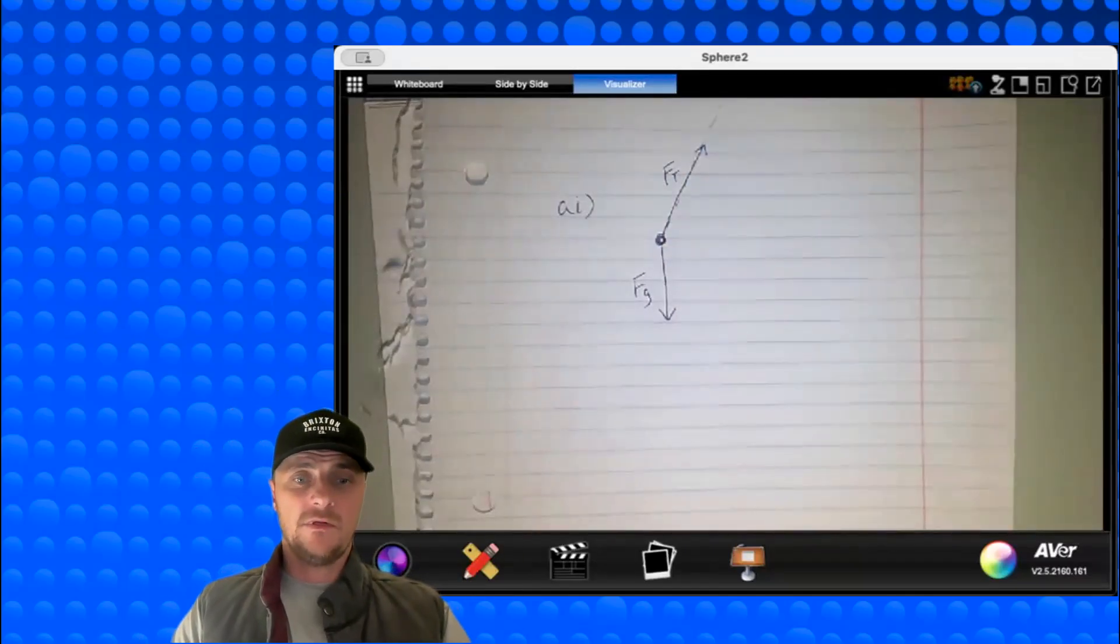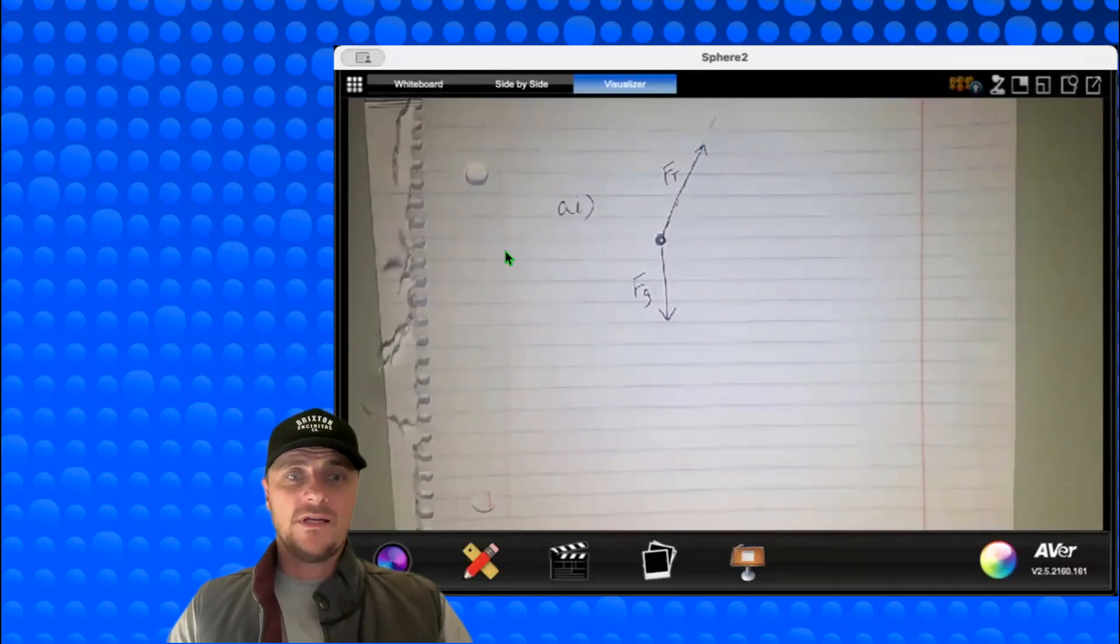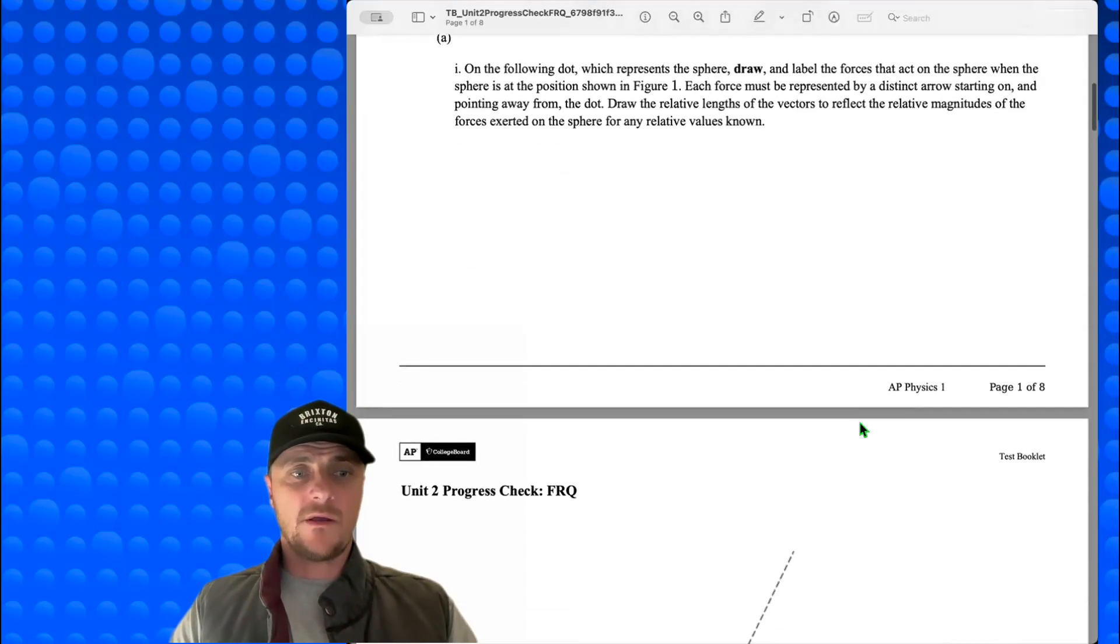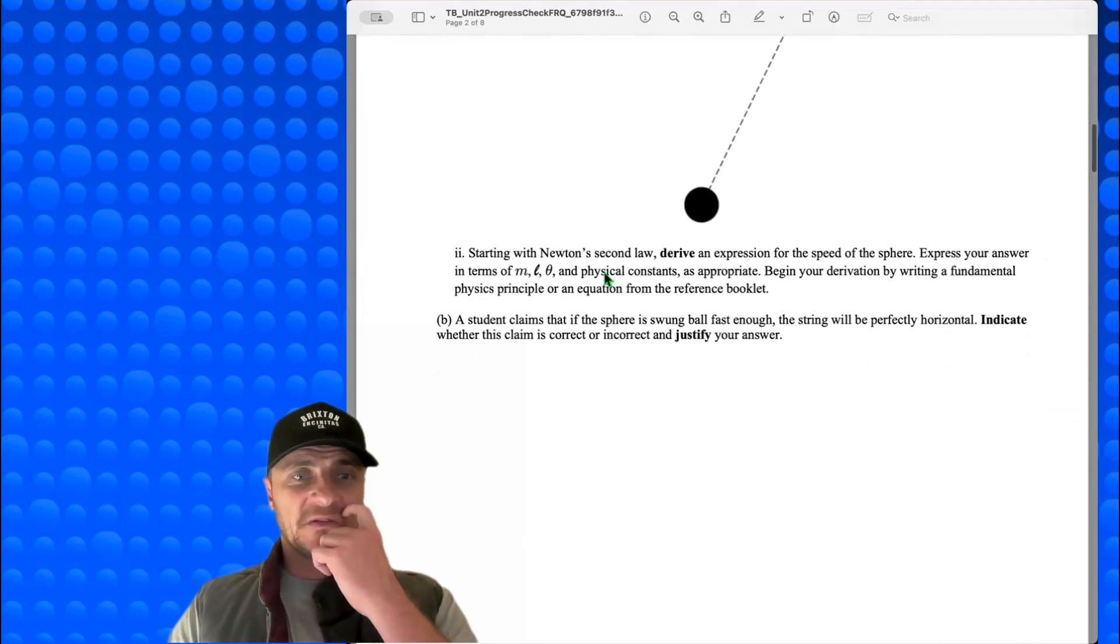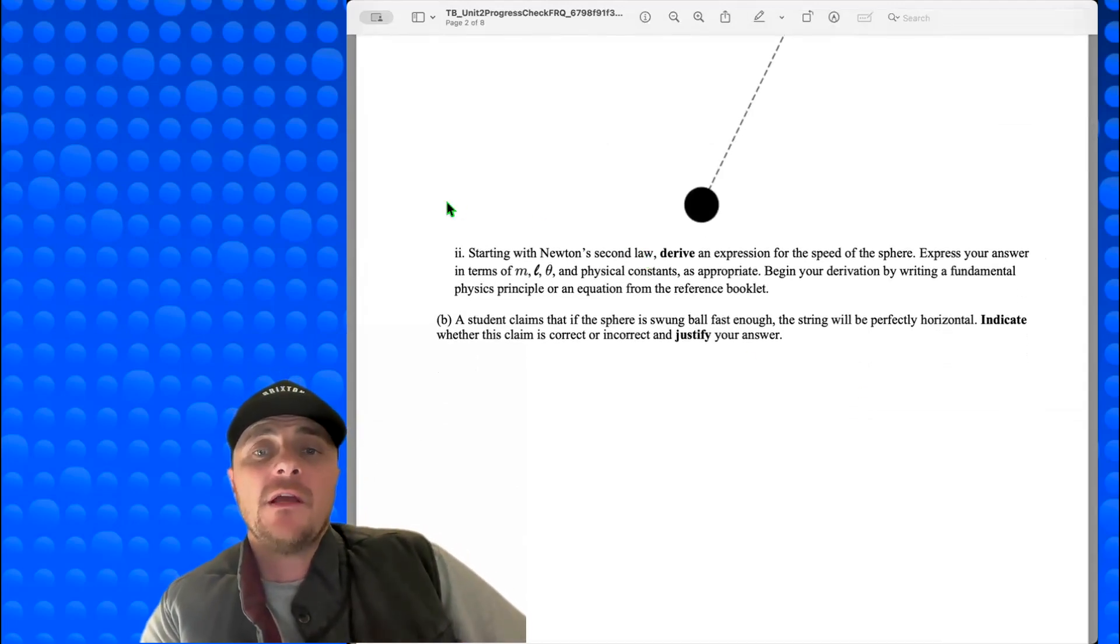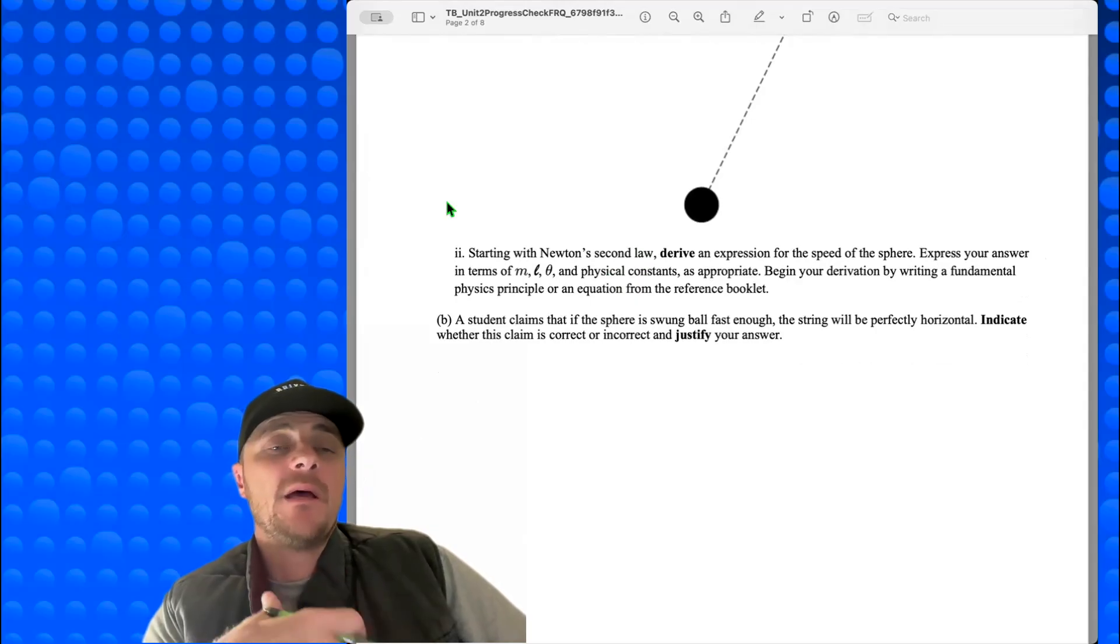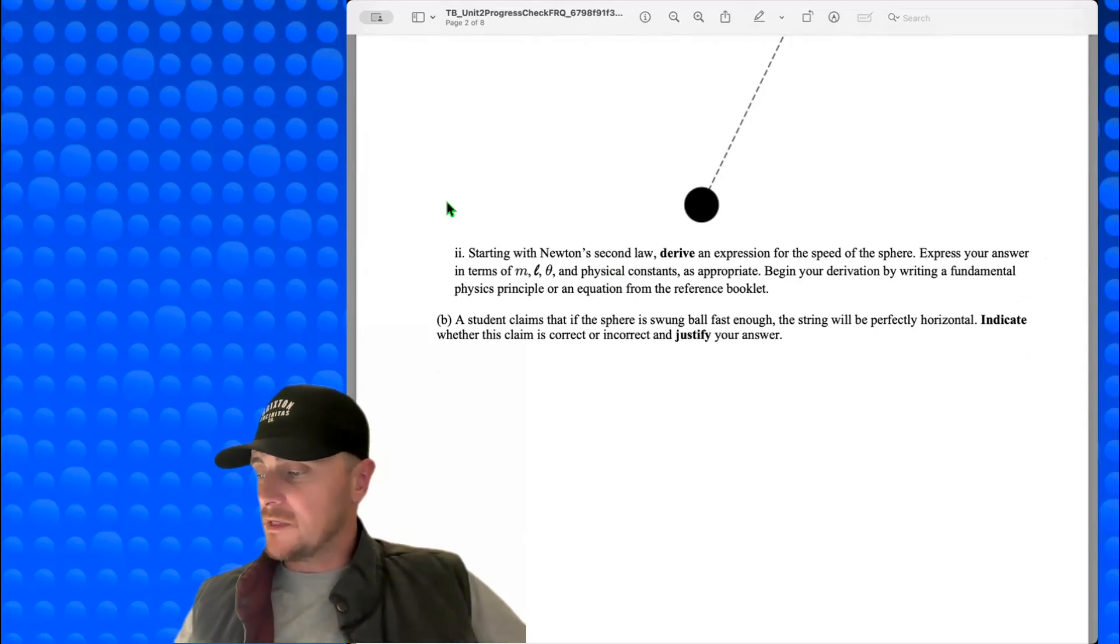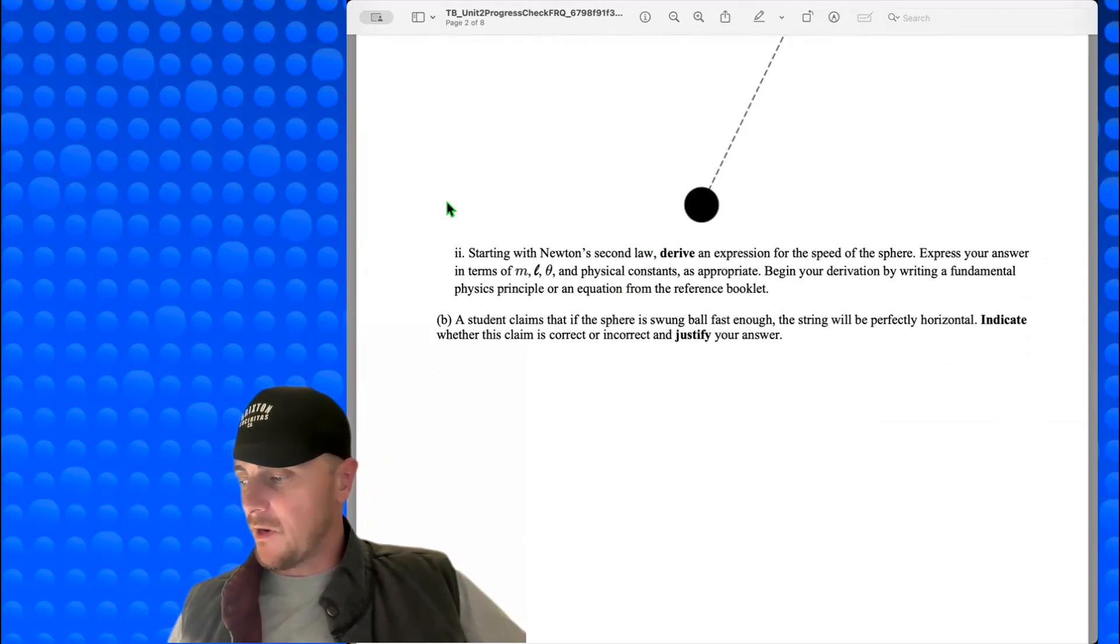Okay, looking at A2, let's head over there. We're going to see that we get into a derivation pretty quick. So starting with Newton's second law, derive an expression for the speed of the sphere. Express your answer in terms of m, l, theta, and physical constants as appropriate. So I'm going to put in A2. I'm saying on my paper right now, and you can write it also, given I have m, I have l, I have theta, and physical constants like g are fine.